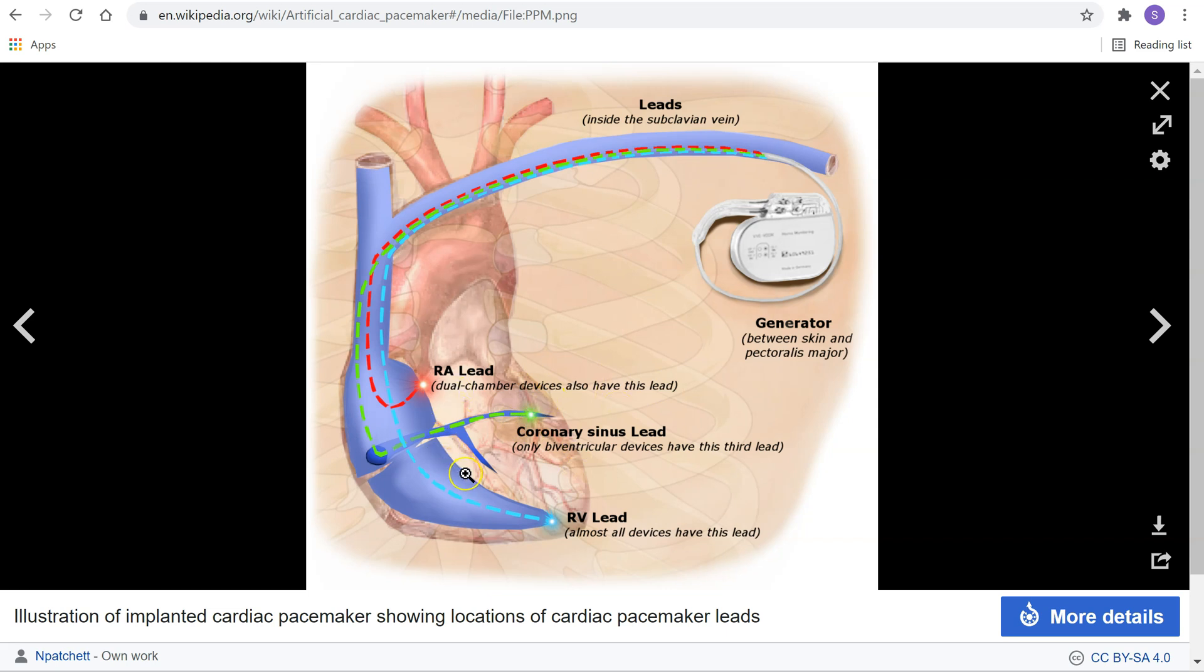A pacemaker regulates the beating of the heart by delivering periodic electrical impulses. In adults, a pacemaker typically establishes a resting heart rate of about 72 beats per minute.